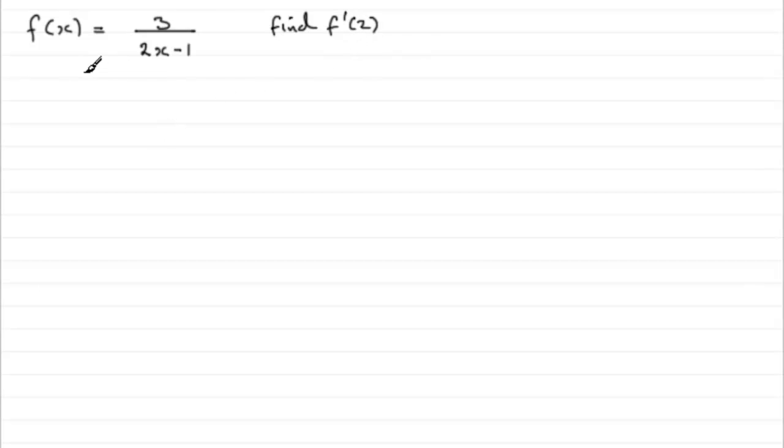How do we differentiate something like this? Well, I certainly wouldn't want to use the quotient rule, even though we've got a fraction here, because I haven't got a function of x on the top. It's not like it's saying 3x over 2x minus 1.